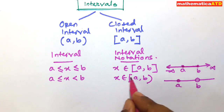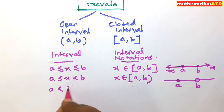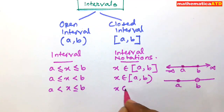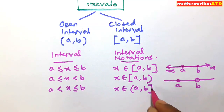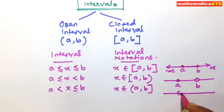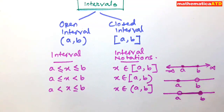Next, for a < x ≤ b, we write x belongs to the semi-open interval (a, b]. On the real line there are two points a and b: a is open, so it is shown as a white ball, and b is closed, so it is shown as a dark ball. All points in between a and b are also taken.